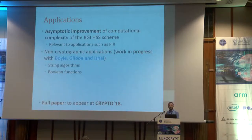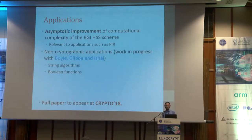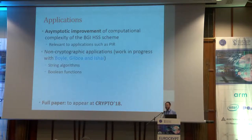As applications, we get an asymptotic improvement of the computational complexity of that homomorphic secret sharing scheme. This is relevant to applications like private information retrieval and other things, and this appears in our paper at Crypto. We are continuing to work on this now with the original authors — Boyle, Gilboa, and Ishai — on algorithms which apply to broader settings. We really believe that this algorithm is quite generic and will be useful in other places as well.